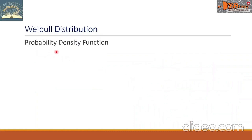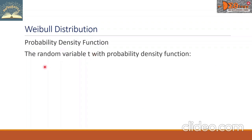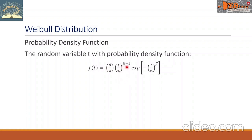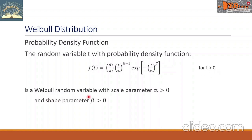Let's begin with the PDF or probability density function. The random variable t with probability density function: f(t) is equal to the fraction beta over alpha, times the quantity t over alpha raised to beta minus 1, times the exponential of the quantity negative of the fraction t over alpha raised to beta. Here, t is greater than 0. It's a Weibull random variable with scale parameter alpha greater than 0, and shape parameter beta greater than 0.